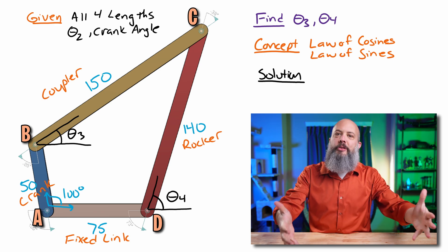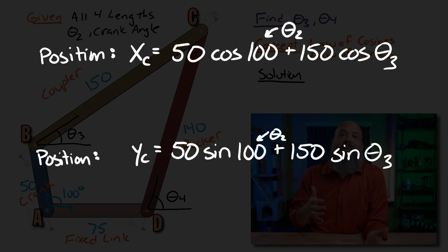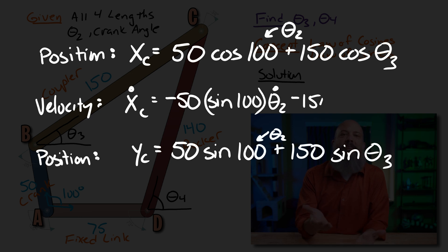You can go a step further from that and find velocities of each point. So when you take the time derivative of this x-direction equation for the position of point C, you get the velocity in the x-direction for point C. So the derivative of cosine is negative sine, so you would end up with negative 50 sine 100.